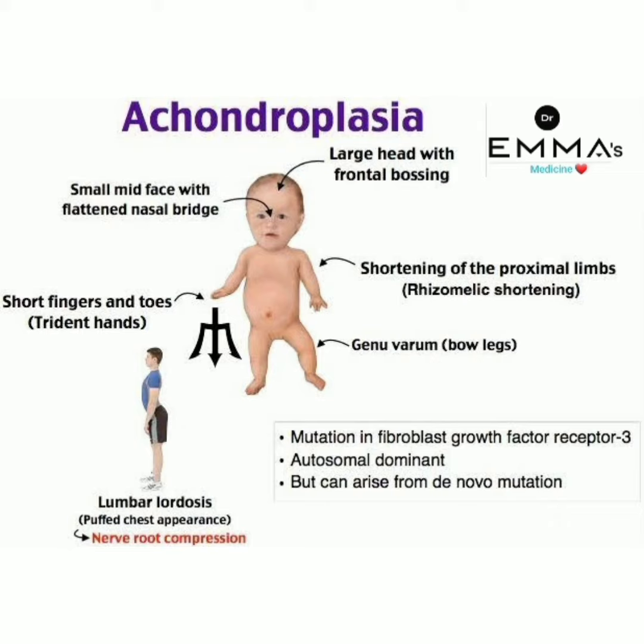There is small mid face with flattened nasal bridge, large head with frontal bossing, and shortening of the proximal limbs called rhizomelic shortening. There is genu varum present, short fingers and toes, trident hand, lumbar lordosis with puffed chest appearance, and nerve root compression.